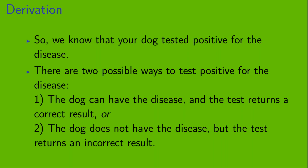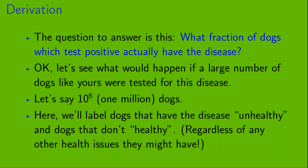We know that your dog tested positive for the disease, but there are two ways a dog could test positive. One: the dog has the disease and the test returns a correct result. Or two: the dog does not have the disease but the test returns an incorrect result. The question is: what fraction of dogs which test positive actually have the disease? Let's see what would happen if a large number of dogs — say 1 million — were tested.